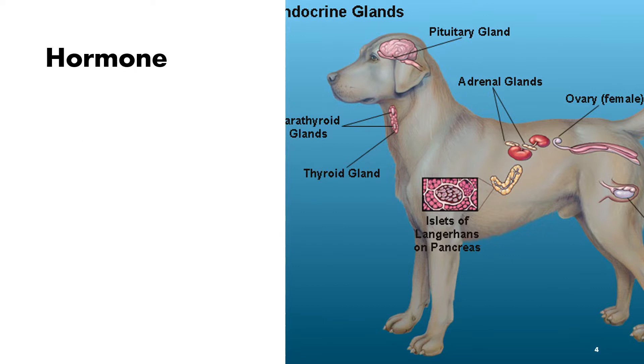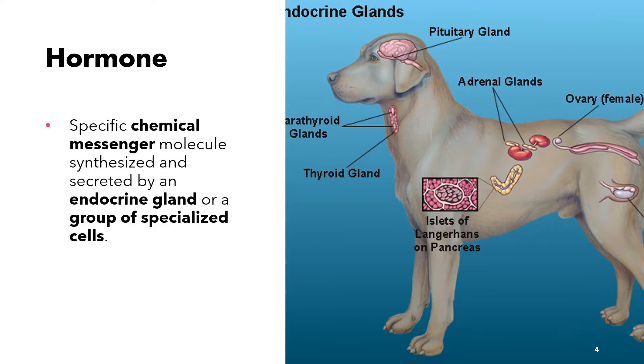The main product of the endocrine system, particularly the endocrine glands, are the hormones. Hormones are specific chemical messenger molecules that are synthesized and secreted by an endocrine gland or a group of specialized cells.